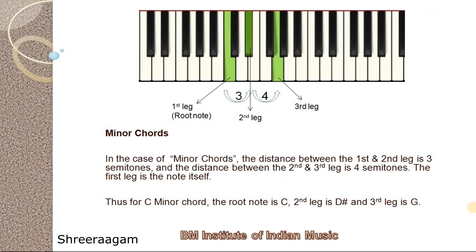In the case of minor chords, the distance between the first and second leg is 3 semitones, and the distance between the second and third leg is 4 semitones. The first leg is the note itself. Thus, for C minor chord, the root note is C, the second leg is D sharp, and the third leg is G.